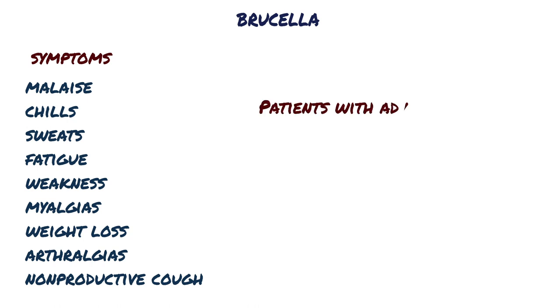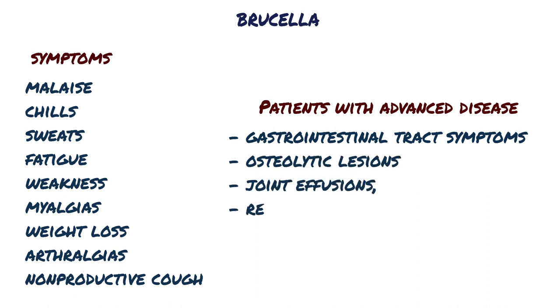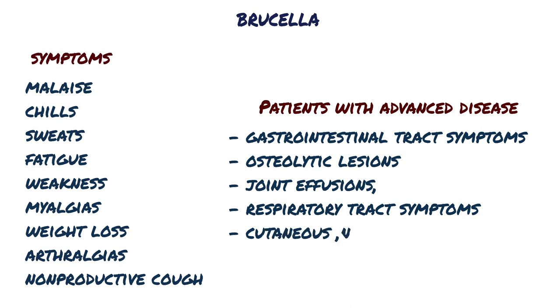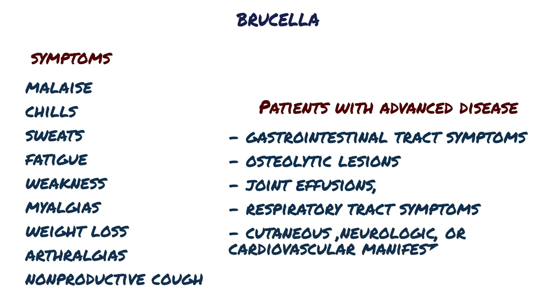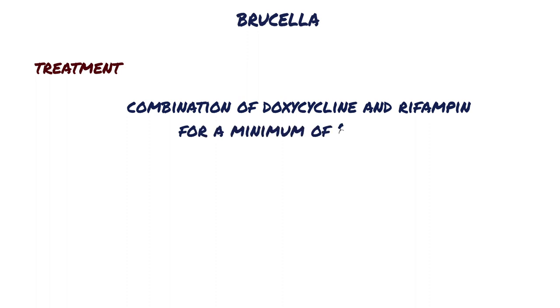Patients with advanced disease can have gastrointestinal tract symptoms, osteolytic lesions or joint effusions, respiratory tract symptoms, and less commonly, cutaneous, neurologic, or cardiovascular manifestations. Finally, the disease is treated with a combination of doxycycline and rifampin for a minimum of six weeks to prevent relapses.